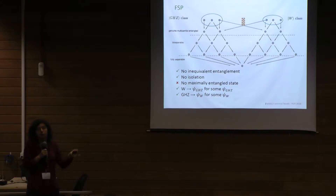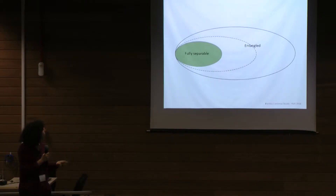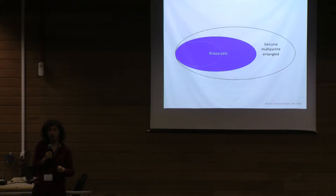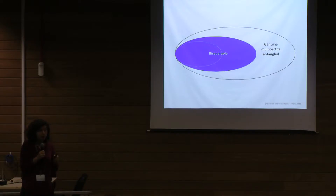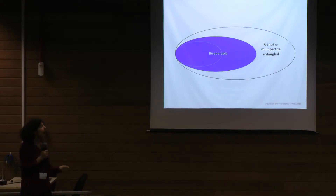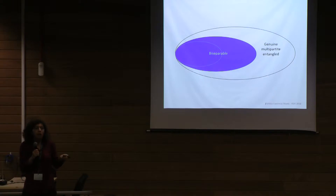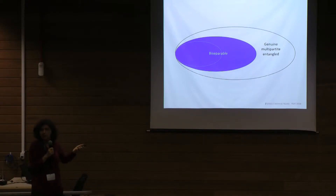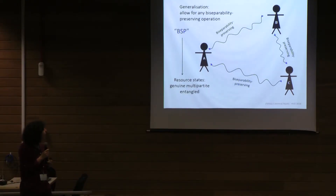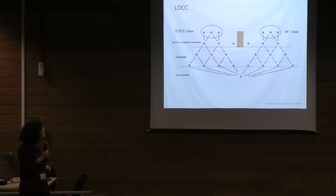I'd like to keep looking because we haven't met the title yet, and it'd be nice if we had a maximally entangled state. So we're going to take the other class of entangled states as our resource states. Before we left the green set invariant; now we're going to leave the blue set invariant. We're going to get biseparability preserving operations as our free operations, defined completely artificially: I can do whatever keeps me within this set.